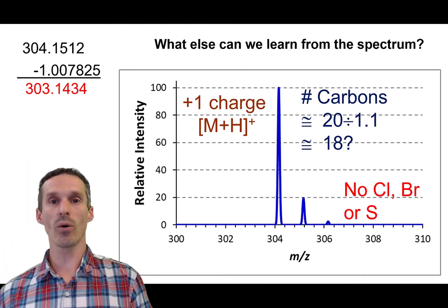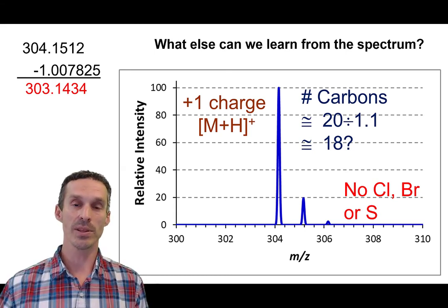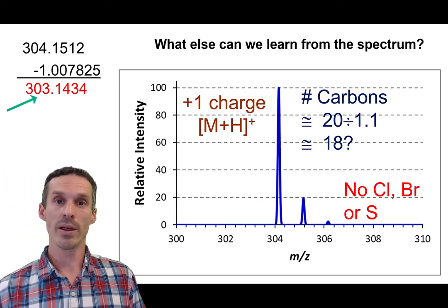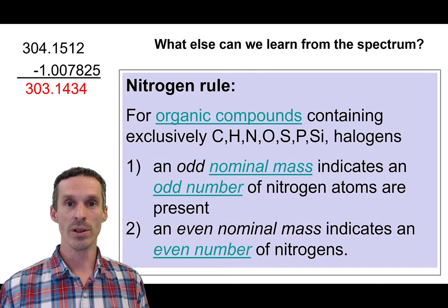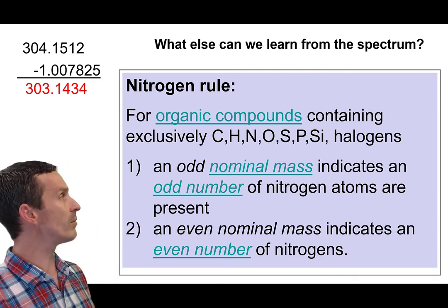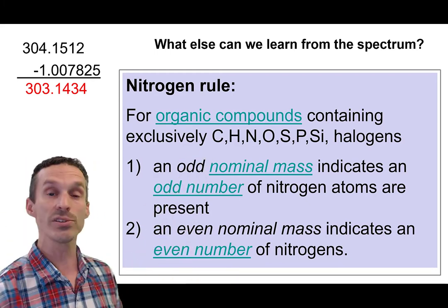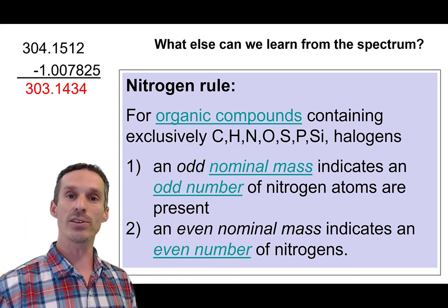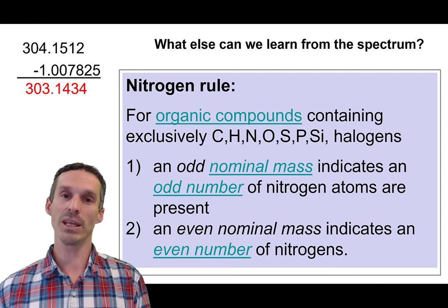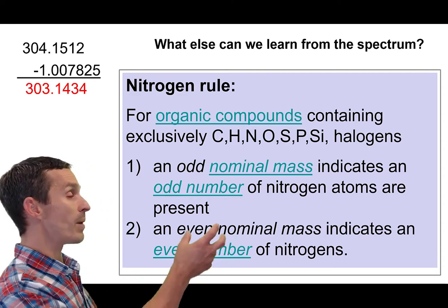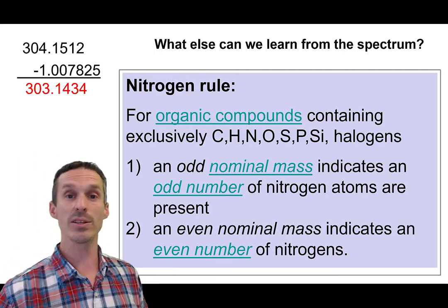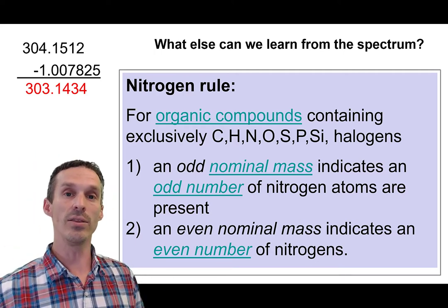And still there's one more piece of information. So you might already know this from an organic class. This is something that's really important to us as well. So you notice the mass that we're dealing with is an odd number. That odd number can be applied to what we call the nitrogen rule. So the nitrogen rule is pretty simple. It's more of an empirical observation. But it comes from the fact that when you're dealing with kind of a regular organic compound that has the usual suspects thrown into it, then an odd mass corresponds to an odd number of nitrogens. And likewise, if your mass has an even number, then there should be an even number of nitrogens. It's important that you're applying that by removing the proton first because that mass 304, that's not really the mass of the molecule. But a mass of 303 means that we must have an odd number of nitrogens in this unknown molecule.